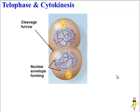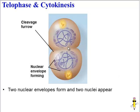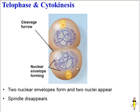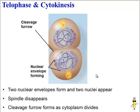The next step is telophase and cytokinesis. We lump these together because they happen almost simultaneously. In telophase, we see two nuclear envelopes start to reform, giving us two identical nuclei, each containing a full set of the chromosomes that the original cell had. We also see that the spindle is disappearing — its job is done. And cytokinesis is beginning; a cleavage furrow has formed, which is going to help separate the cytoplasm so that we get two identical cells.